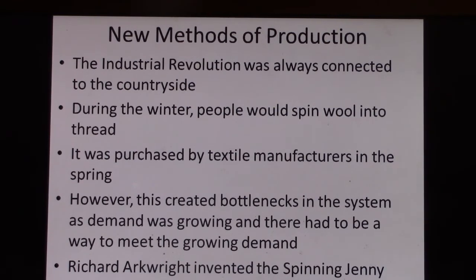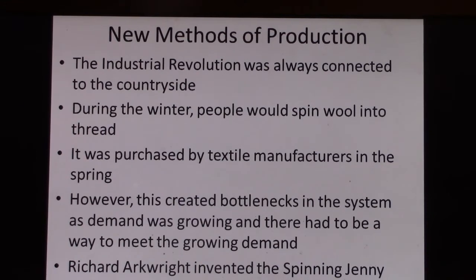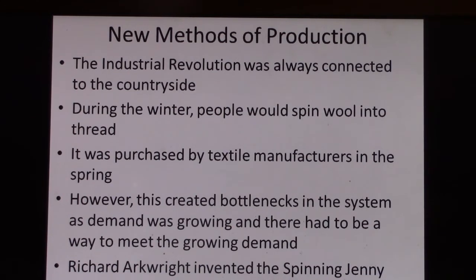In the springtime — March, April — large textile manufacturers would come by in a big wagon, buy the finished product — the wool spun into thread — and take it back to their factories. In this way, industrial development takes place in the countryside. The problem is this rural system creates bottlenecks: there is a larger demand than the quantity of product, and you have to wait until spring to purchase the wool.